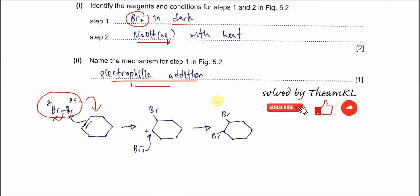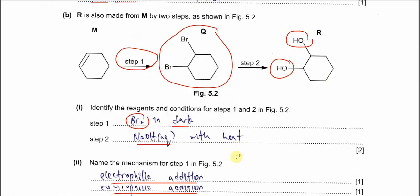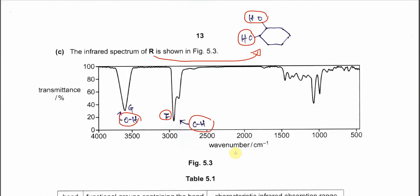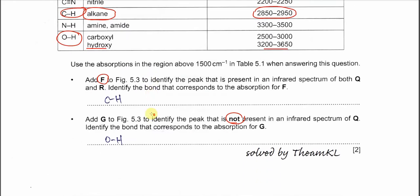So the one that's not present in Q it must be the OH bond. Because the Q is the halogenoalkane without OH. R is the one with OH. So this is the one that. The difference between the Q and R. The absorption. So you need to put the G here. Around this absorption. Right. Next to this absorption. And this is because of OH bond. Okay. So now you just put the CH bond and OH bond here.